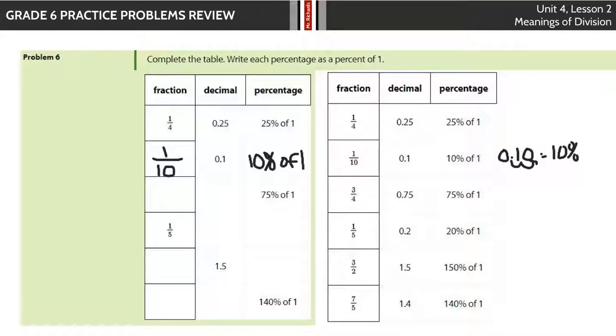0.1. If you move that decimal over twice to the right, it is 10%. Now 75% of 1. Well, if we think of that as a fraction here, 75 over 100, if we divide by 75 on top and bottom, you get the fraction 3 fourths. And again, 75% if you move that decimal over 2 times to the left, you can get the decimal 0.75, which is that 7,500, which is 75%. They're all the same.